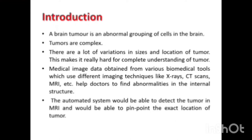What is a Brain Tumor? A brain tumor is an abnormal grouping of cells in the brain. Tumors are complex — there are a lot of variations in sizes and locations of tumors, which makes it really hard to fully understand them. Medical image data obtained from various biomedical tools using different imaging techniques like X-rays, CT scans, MRI, etc. helps doctors find abnormalities in the internal structure. Automated systems would be able to detect the tumor in MRI images and pinpoint the exact location of the tumor.